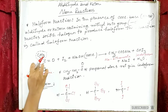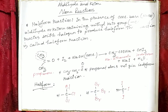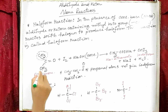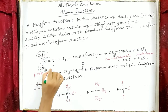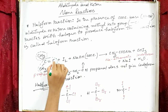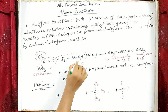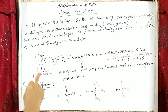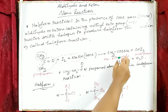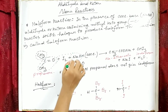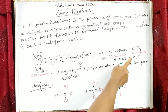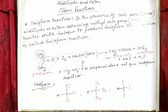In the haloform reaction of propanone with iodine: the methyl ketone group takes part in forming iodoform (CHI3), and the other part — CH3CO — combines with NaOH to produce CH3COONa (sodium ethanoate). Additionally, sodium combines with iodine to produce sodium iodide, and water is also produced.